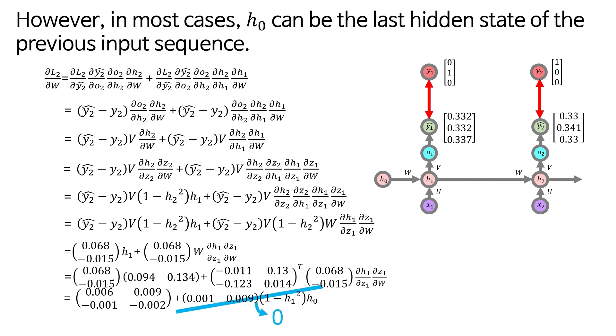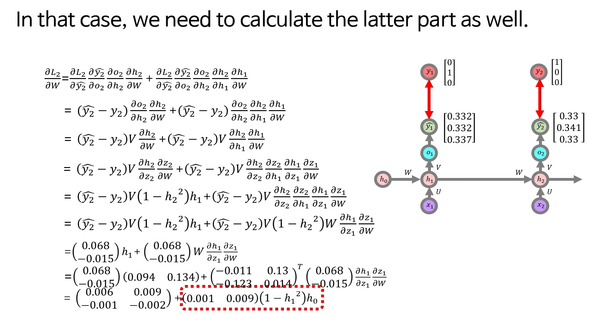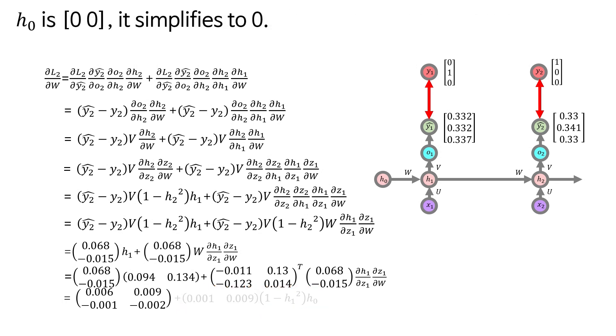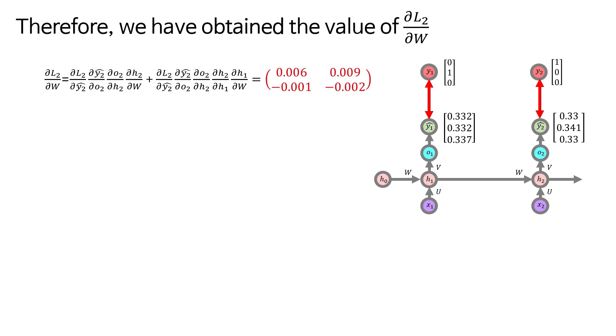However, in most cases, H0 can be the last hidden state of the previous input sequence. In that case, we need to calculate the latter part as well. H0 is 0, 0. It simplifies to 0. Therefore, we have obtained the value of del L2 del W.